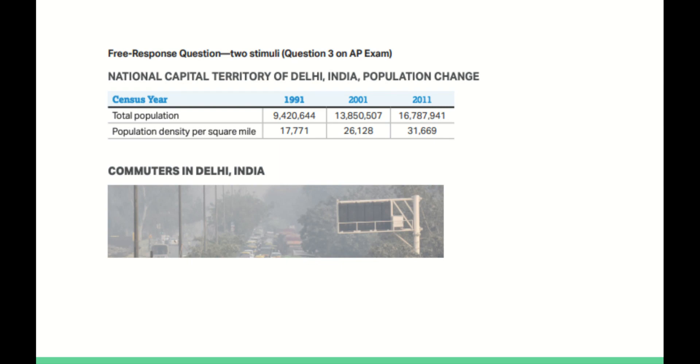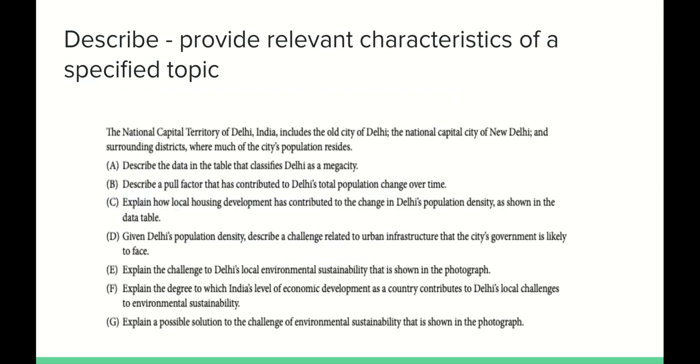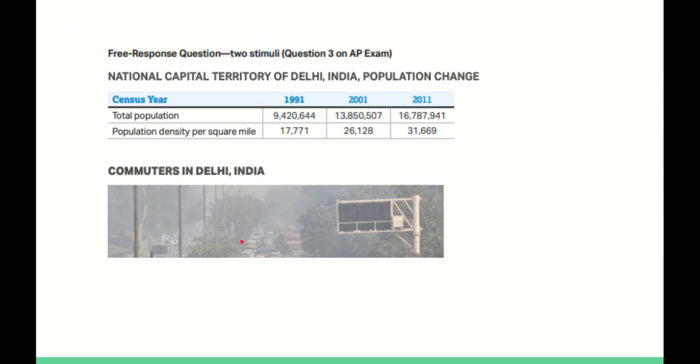Another one: explain a possible solution to the challenge of environmental sustainability that is shown in the photograph. You could say something along the line - this is where you're thinking cities and urban, right? Challenges to urbanization - we think of public transportation, when we think of people not living in suburbs that increases pollution levels because they have to commute. But public transportation, things like rail systems, subway systems, that type of thing, or car sharing, any number of different things that would be at the top of your list to try and write a response to this particular FRQ question.